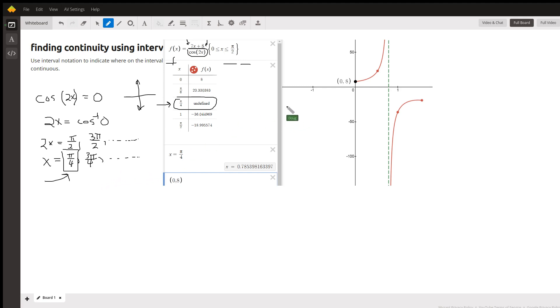So the function is continuous on the interval from zero to π over 4, union π over 4 to π over 2.